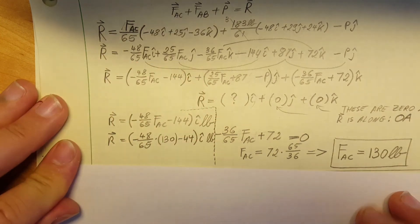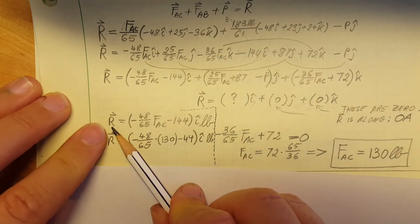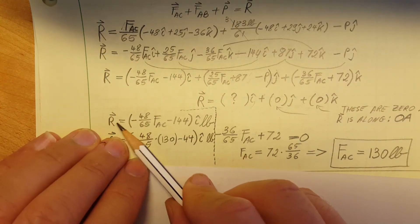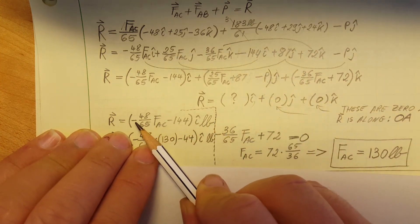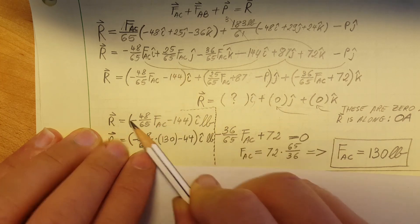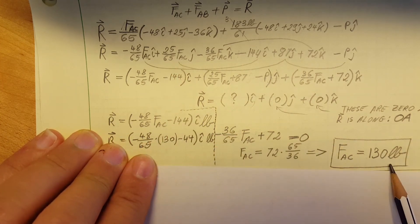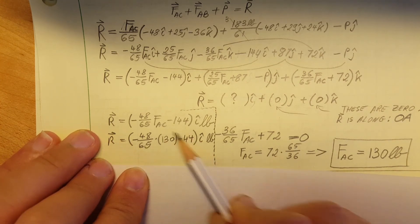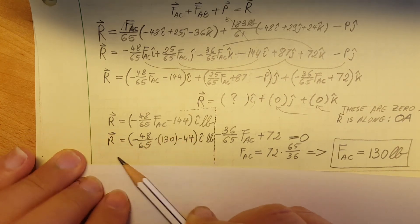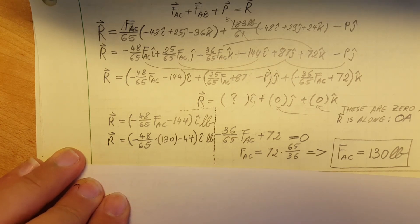Also, if we want, we can write our resultant. Since these two are gonna be 0, we don't write it, so it's gonna be just this part which is right here. But now we found the FAC, 130. We can go ahead and plug it in, and when you calculate this, we're gonna have a nice looking vector for our resultant.